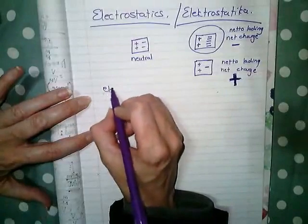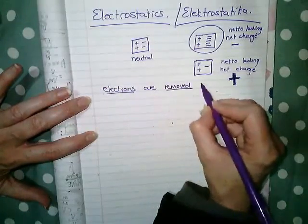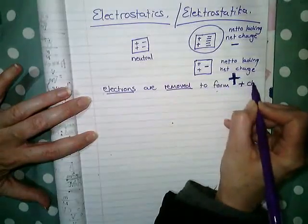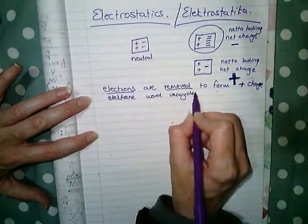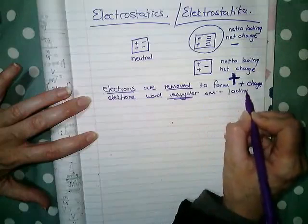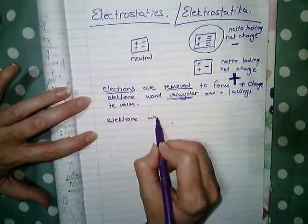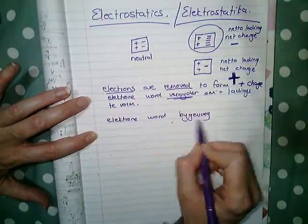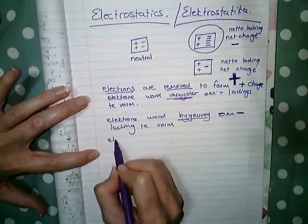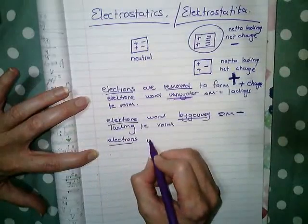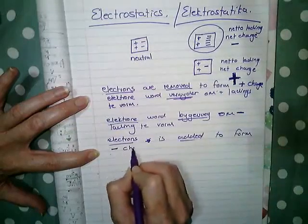It's always electrons that are removed or added. Electrons are removed to form a positive charge. So elektroene word verweider om positieve lading te vorm, en elektroene word bygevoeg om negatieve lading te vorm. Electrons are added to form a negative charge.